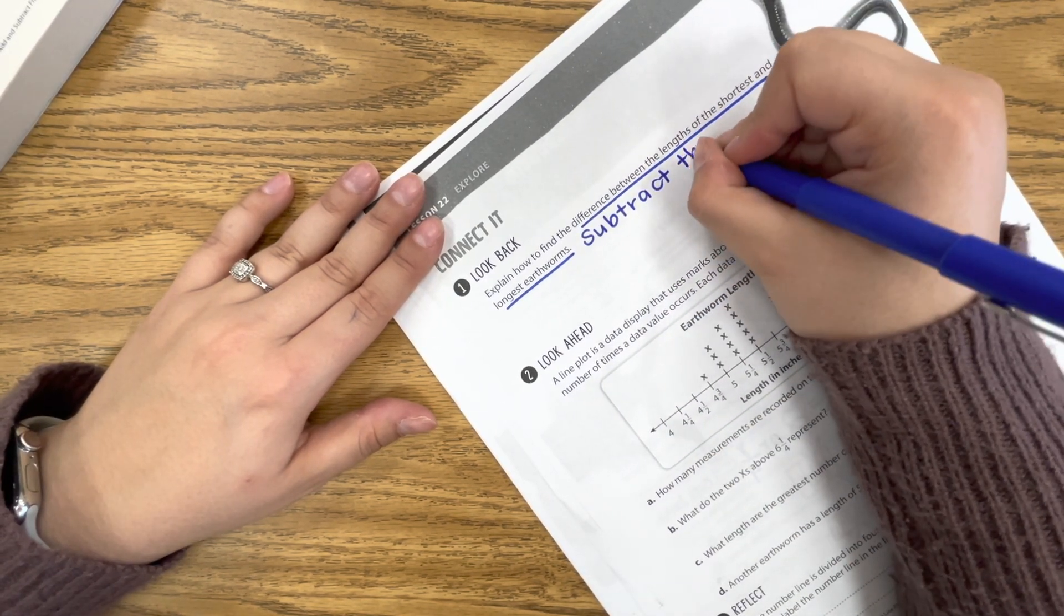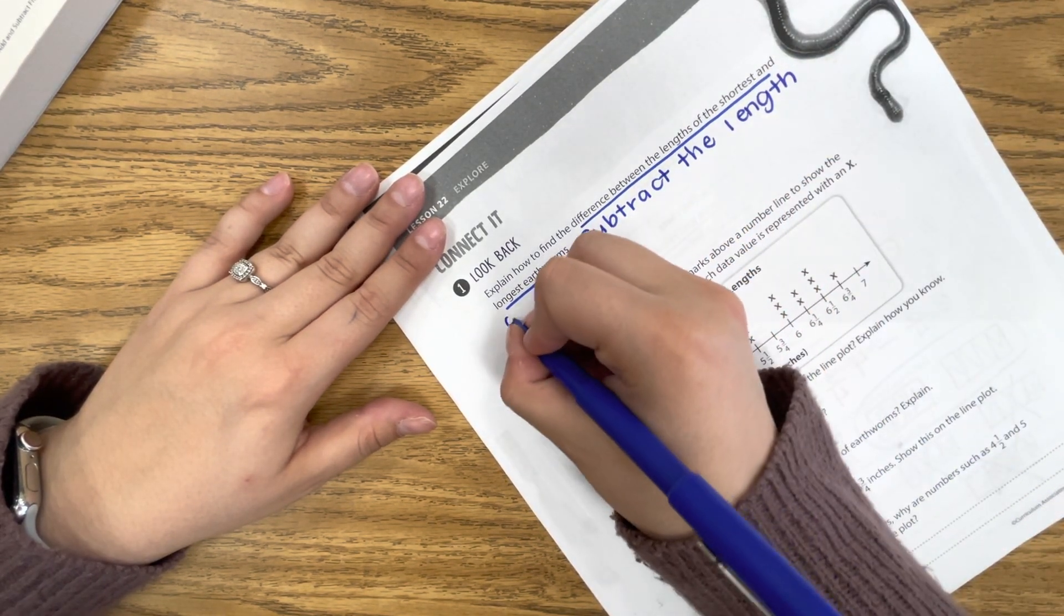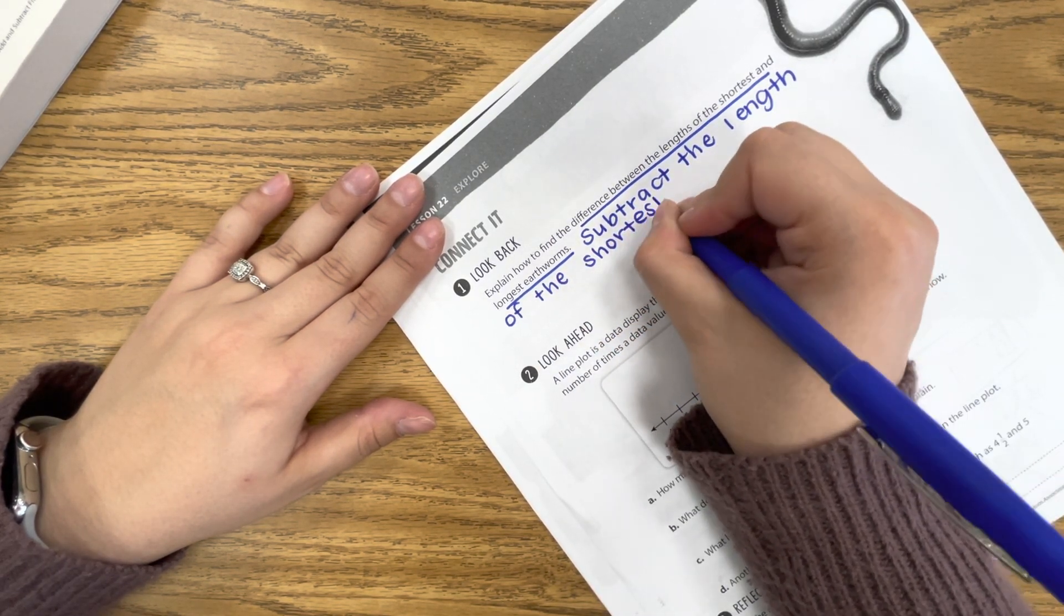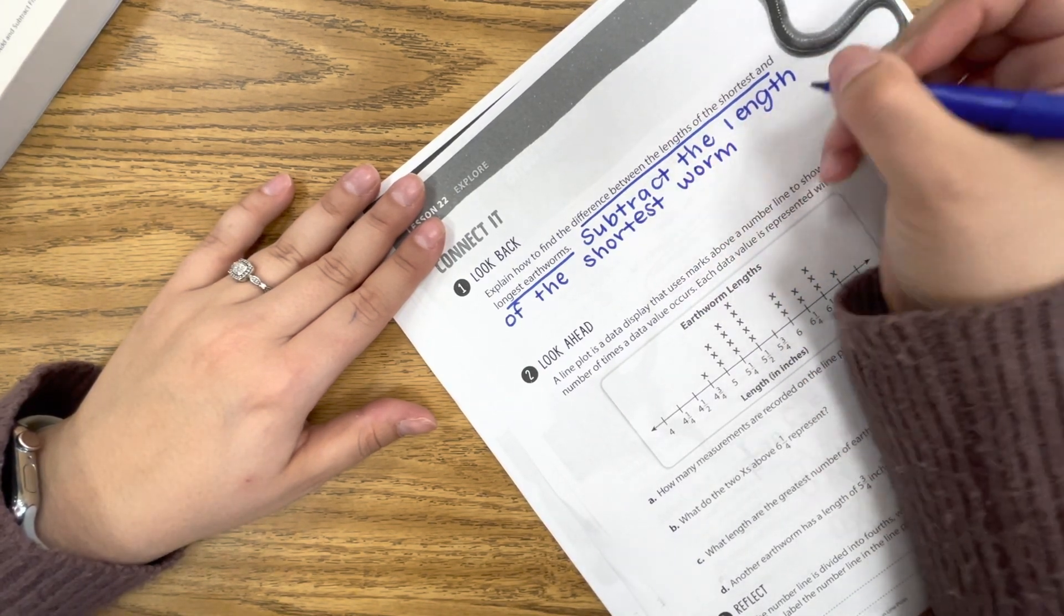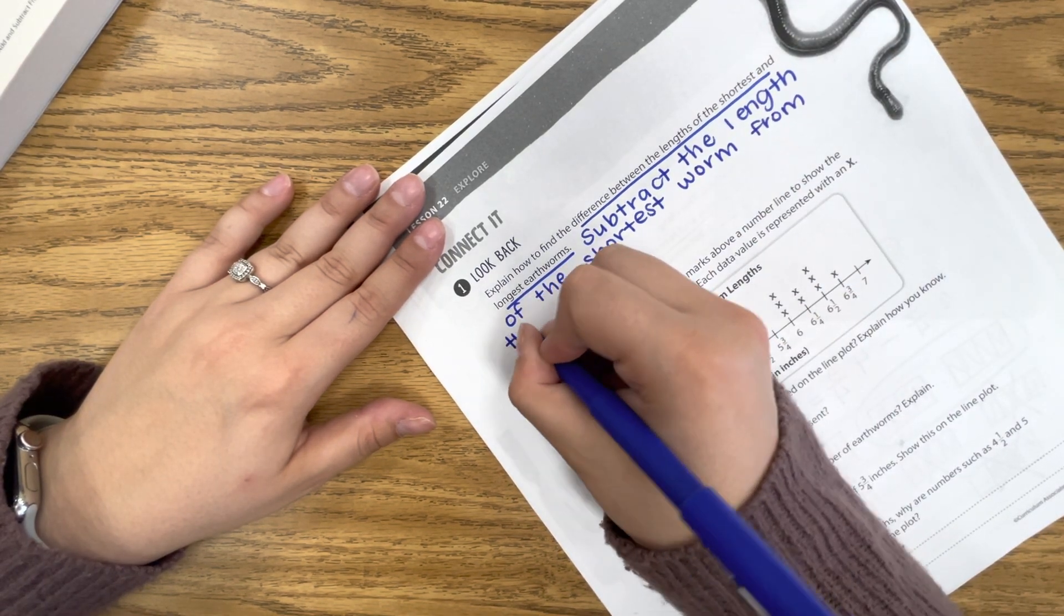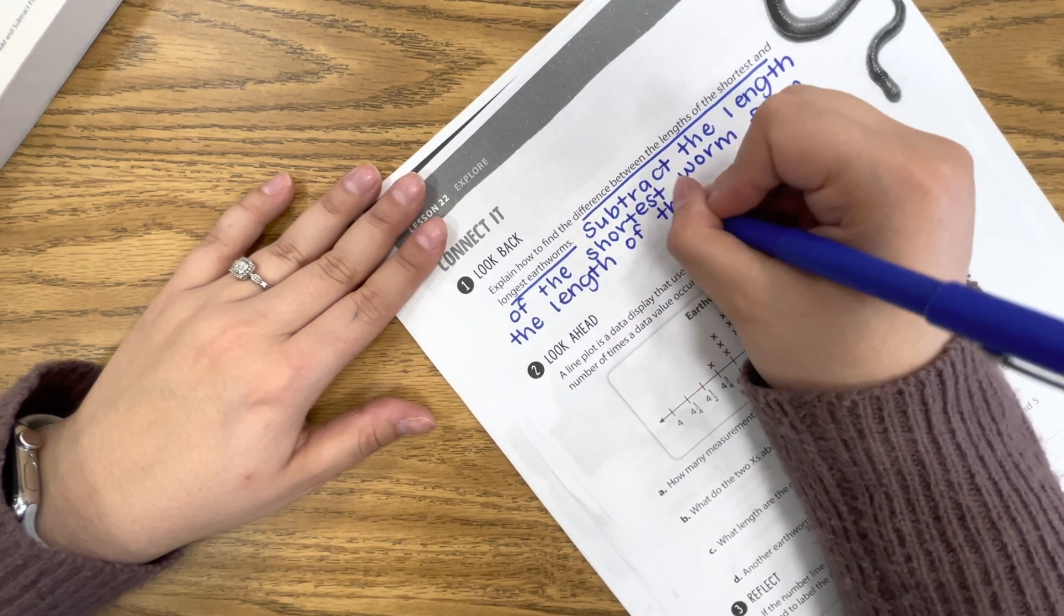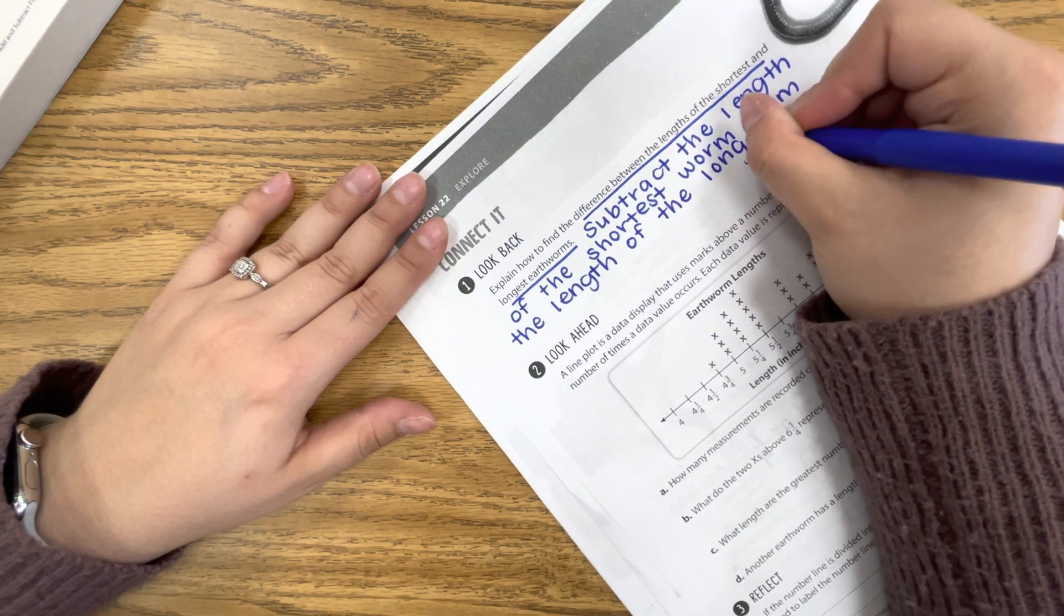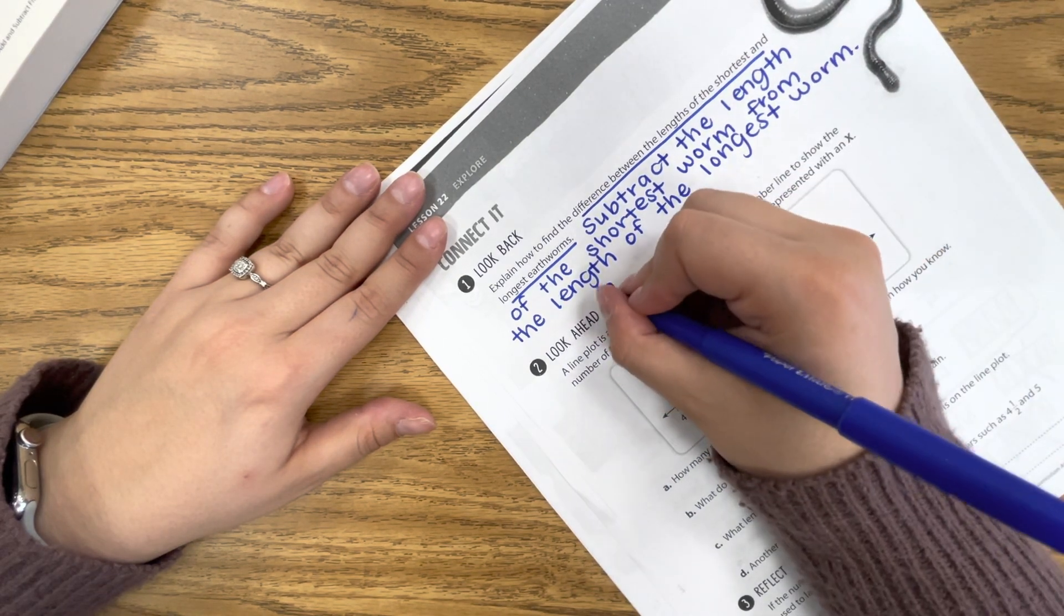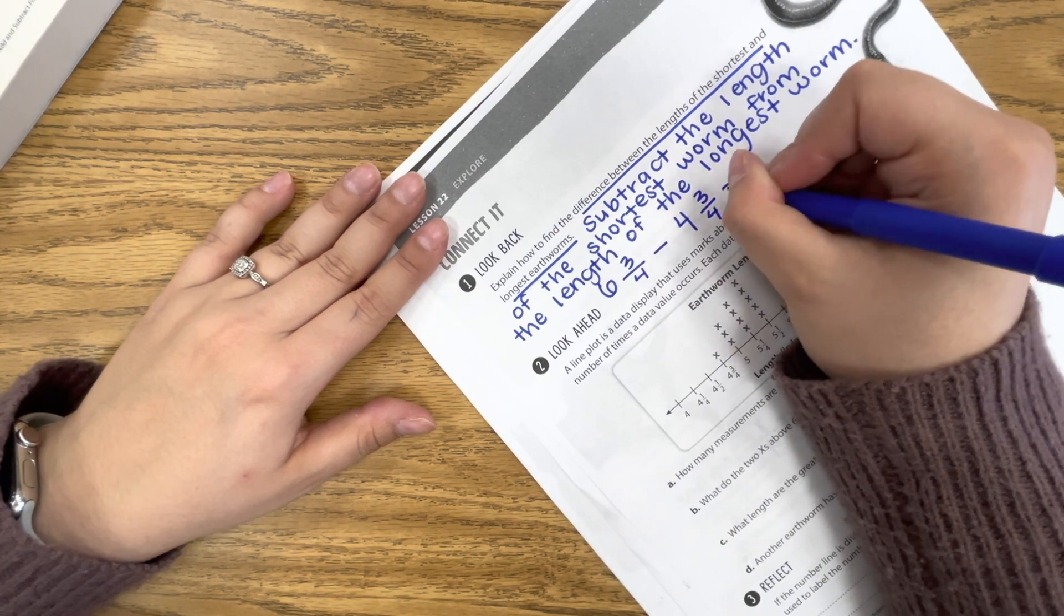So subtract the length of the shortest worm from the length of the longest worm. Remember, we're just going to rewrite our equation. So 6¾ take away 4¾ is equal to 2.